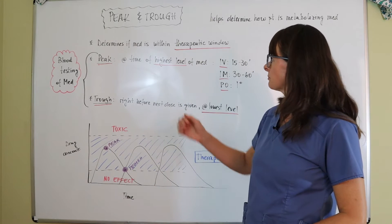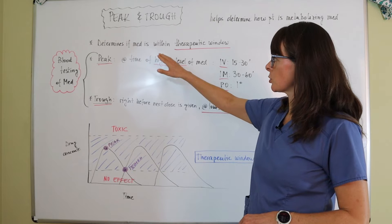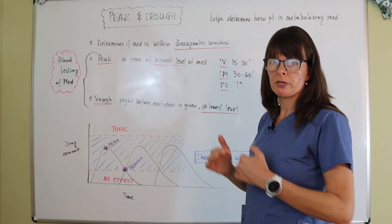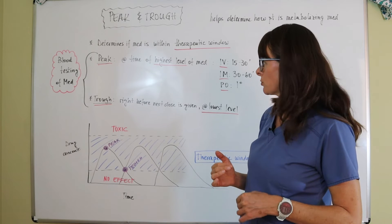So for peak and trough, it helps us determine if the medication is within the therapeutic window, because if we have too little or too much of an effect, that's not good for the patient either.